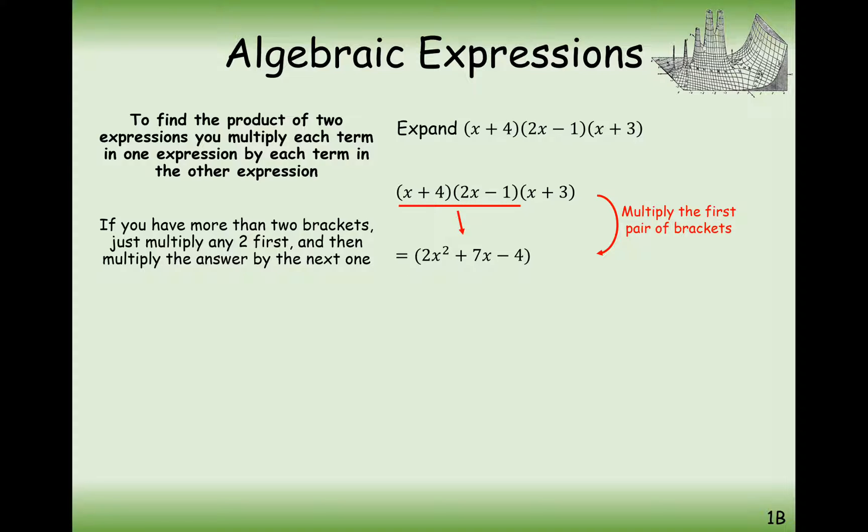So expanding this, we get 2x squared plus 7x minus 4, and bring back in that x plus 3 term. And now we're going to expand everything from the left-hand bracket with everything in the right-hand bracket. So the first expansion we have to do is 2x squared times x and 2x squared times 3.